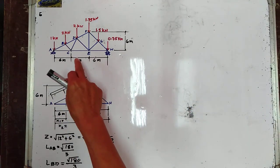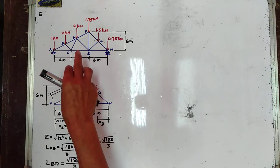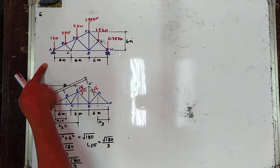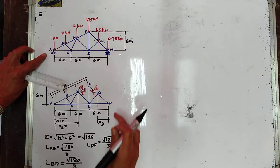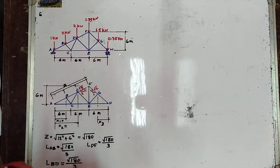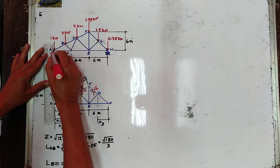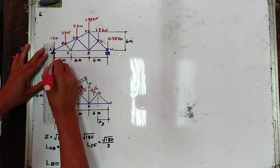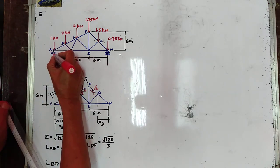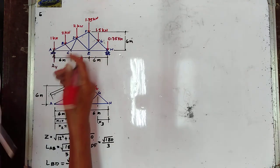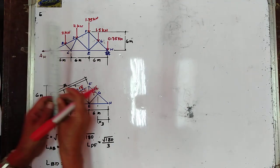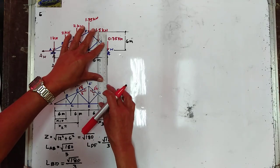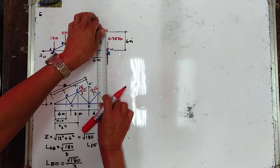Determine the bar force in each member of the double pitch roof truss shown. We have a hinge support at A and a roller support at H. So we have A vertical for the hinge reaction, A horizontal, and then the reaction of the roller is normal to the application of the roller, so we have H vertical.